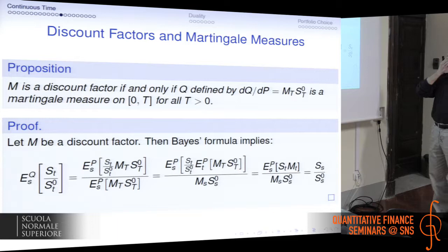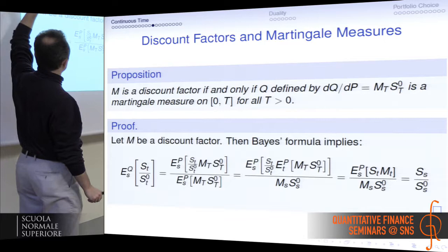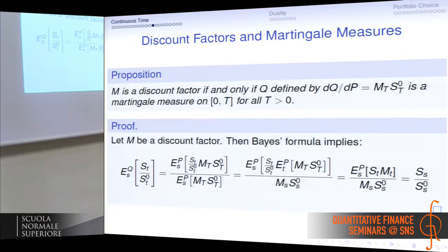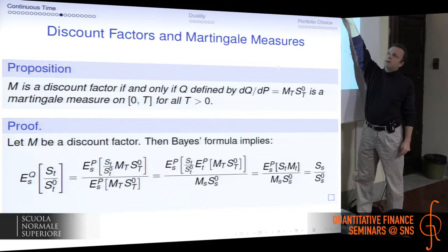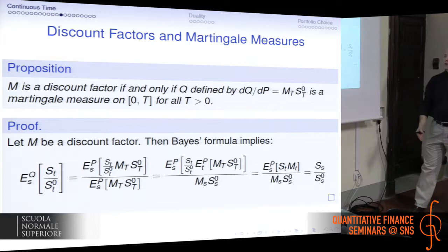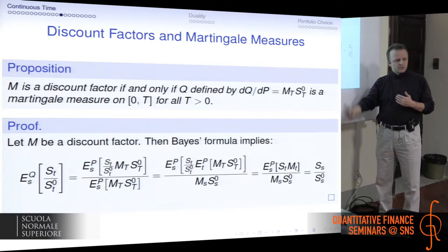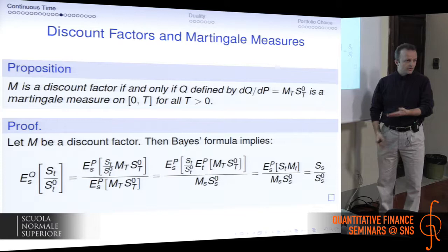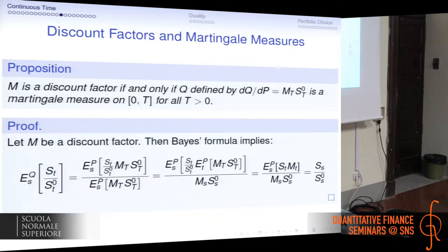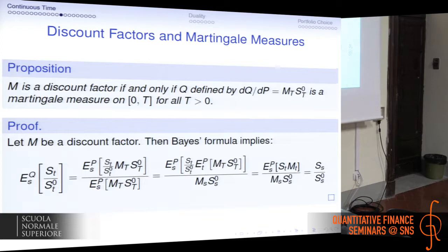The proposition says that if you have a strictly positive stochastic discount factor M, it corresponds to a martingale measure defined by the identity: the Radon-Nikodym density equals the stochastic discount factor multiplied by the risk-free asset price. This is true for any finite time horizon T, but not for the entire operating interval [0, +∞), because typically the Radon-Nikodym derivative becomes singular — in most models it becomes zero almost surely — which is certainly not a reasonable change of measure.